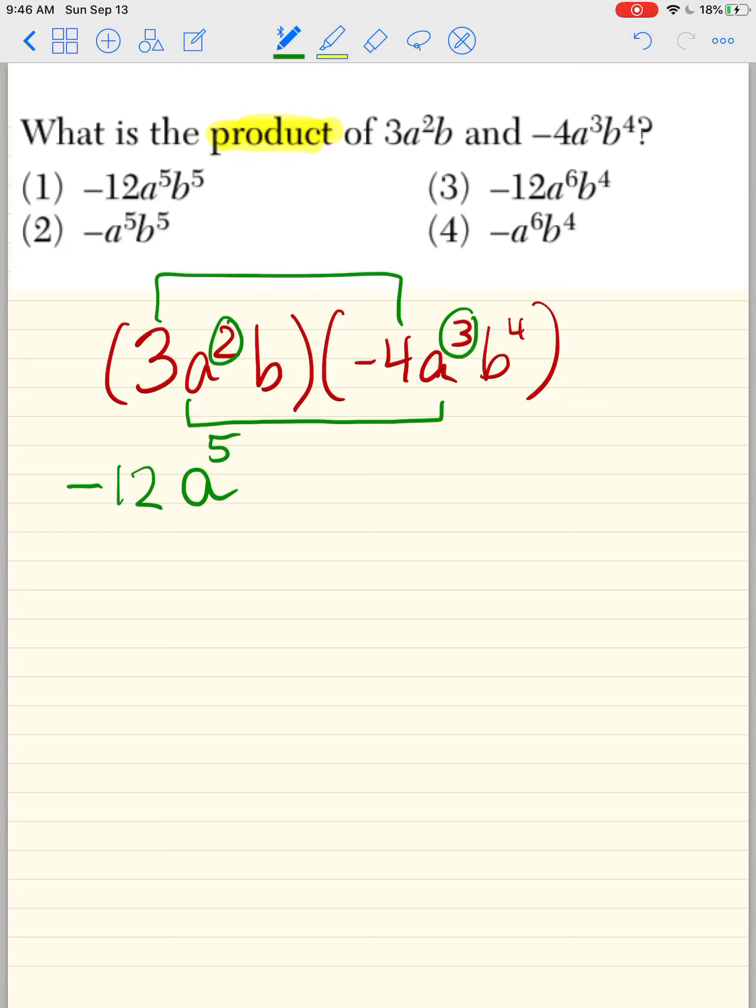So that's going to be a⁵, and then b and b⁴. Everybody knows that when it just says b, there's a 1 hidden there. Okay, so b¹, b⁴ makes b⁵. Be careful with your answers. It's going to be choice one. And that's all you have to do.